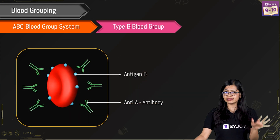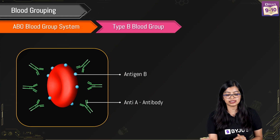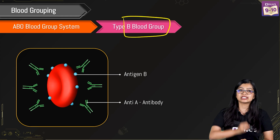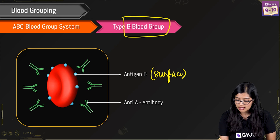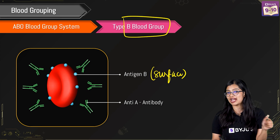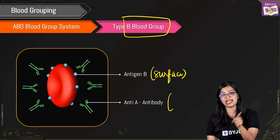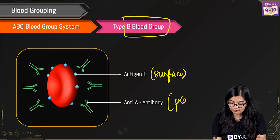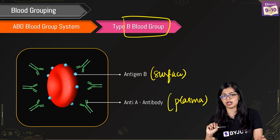Similarly, in blood group B the antigen present on the surface is antigen B. In the plasma you will not find antibody B, but you will find anti-A. That is the second blood group.